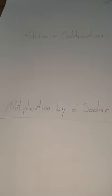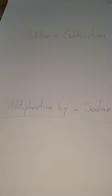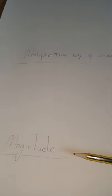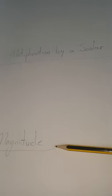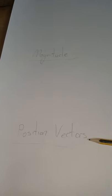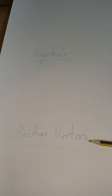I want to look at how we multiply a vector by a scalar — remember, a scalar is just a number — how we find the magnitude of a three-dimensional vector, and finally how we work out the components of position vectors.